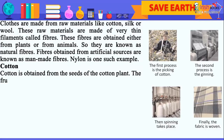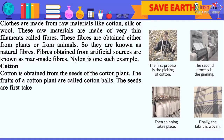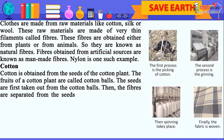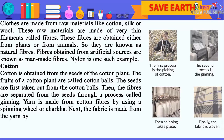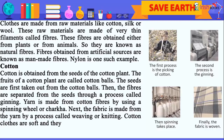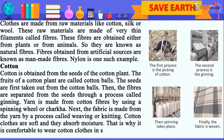Cotton is obtained from the seeds of the cotton plant. The fruits of a cotton plant are called cotton balls. The seeds are first taken out from the cotton balls, then the fibers are separated from the seeds through a process called ginning. Yarn is made from cotton fibers by using a spinning wheel or charkha. Next, the fabric is made from the yarn by a process called weaving or knitting. Cotton clothes are soft and they absorb moisture, which is why it is comfortable to wear cotton clothes in summer.